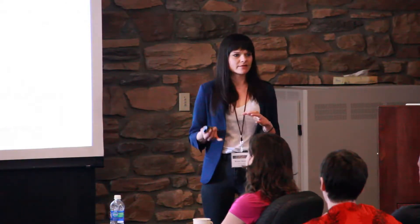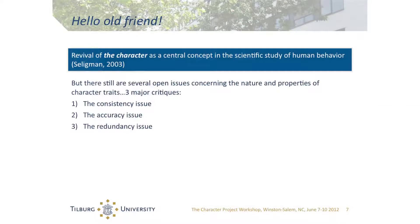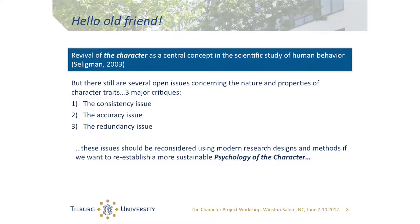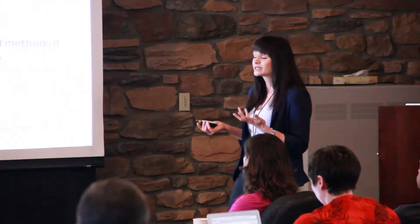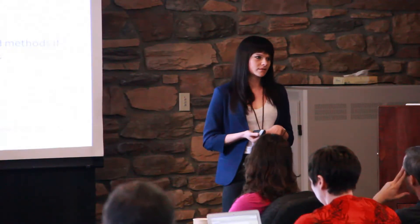We should not forget that there are still several issues regarding the nature and properties of character traits. It was not without cause that scientific psychology neglected research into character traits for a long time. Three major critiques have frozen this research for nearly a century: the consistency issue, the accuracy issue, and the redundancy issue. We should carefully reconsider these issues using modern research designs and methods if we want to re-establish a sustainable psychology of character.